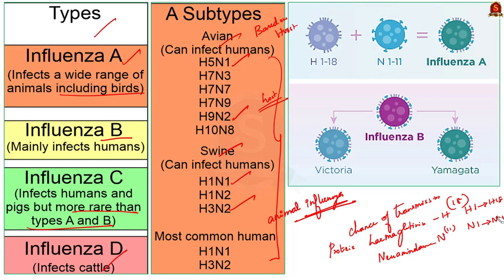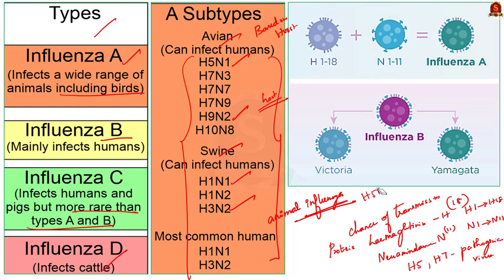Among these different subtypes, H5 and H7 are known to include highly pathogenic viruses, and particularly H5N1 is a cause for current concern. H5N1 causes disease in chickens and other species of birds.